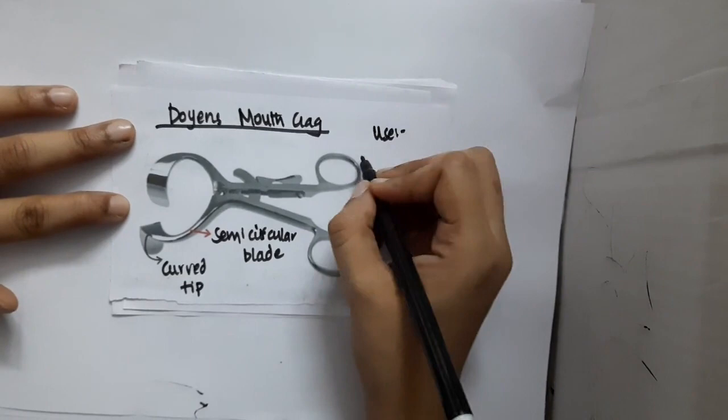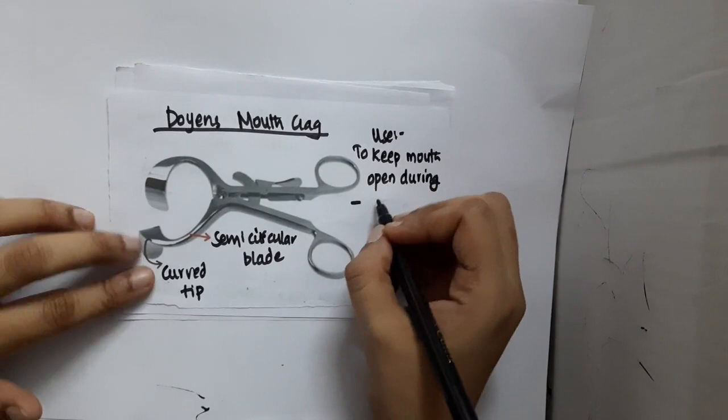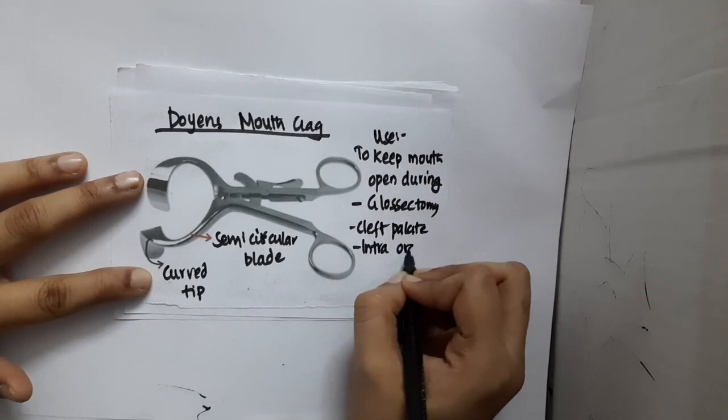What is the use of Doyen's mouth gag? It is used to keep the mouth open during surgeries related to the tongue, such as glossectomy, cleft palate surgery, or for intraoral ranula.